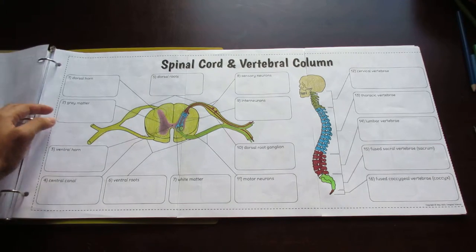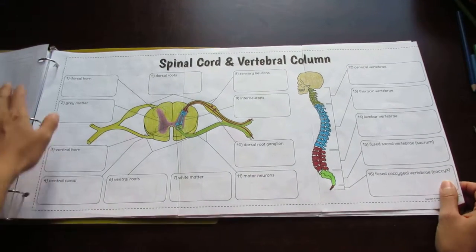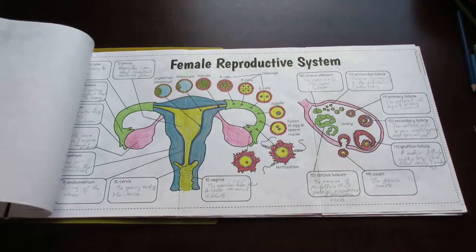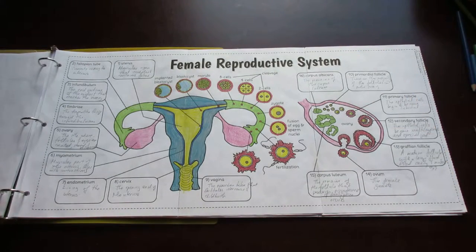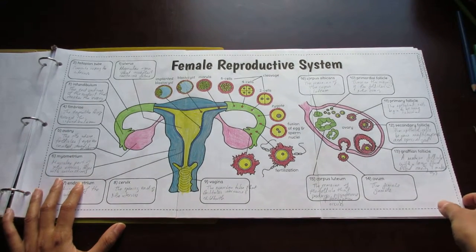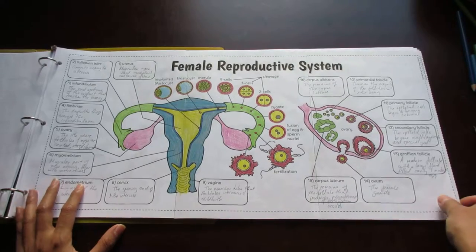We have the spinal cord and the vertebral column. Here's the female reproductive system. And I've also got a little frisky and chose to fill in some of the text boxes, description boxes, that the students will be filling in.